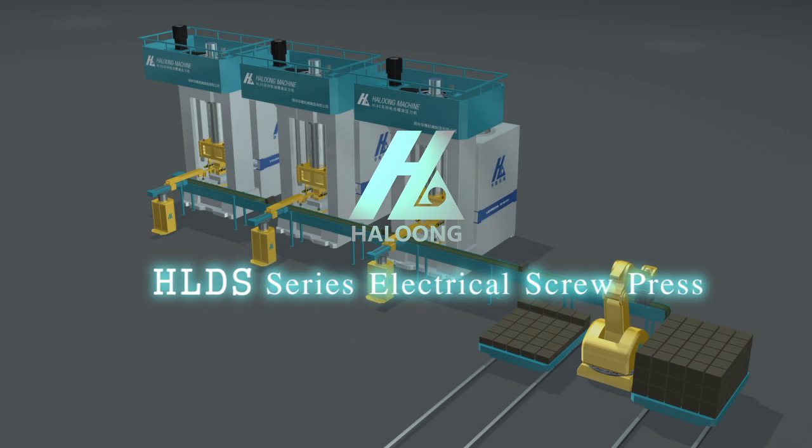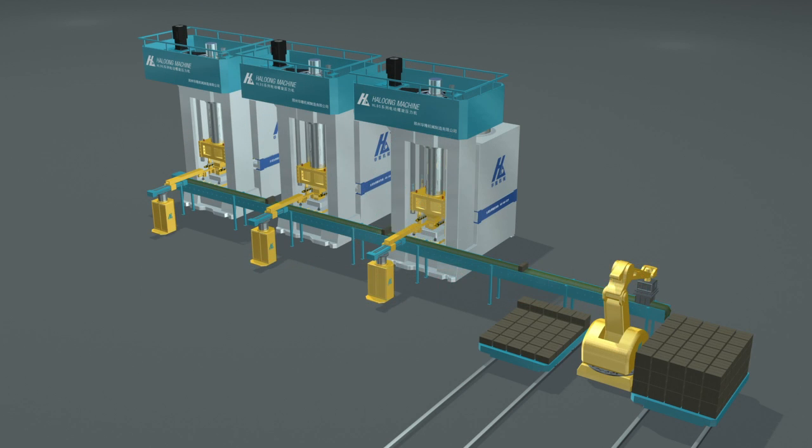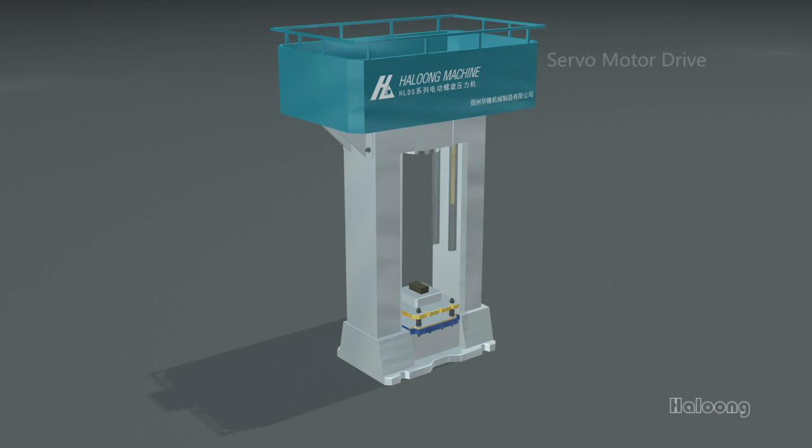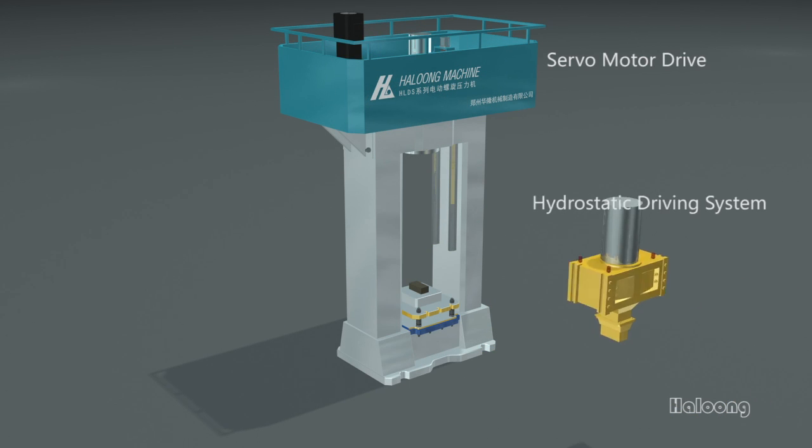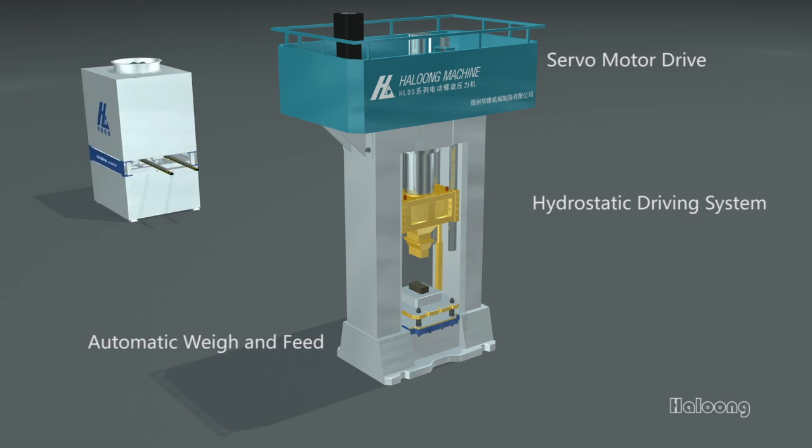Heloon HLDS series electric screw press machine is directly driven by the servo motor and power force is transferred by the static pressure type screw nut system.